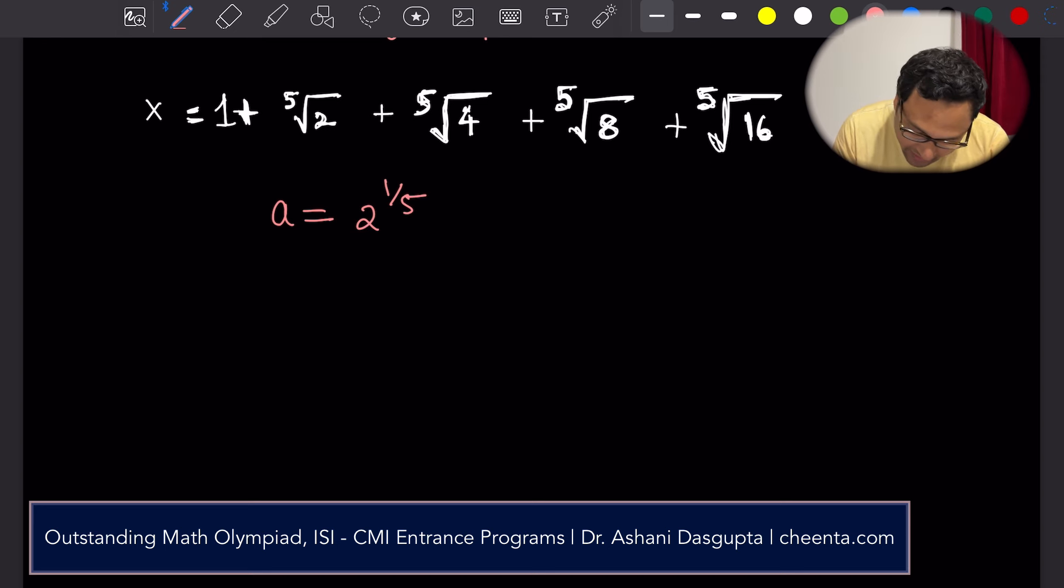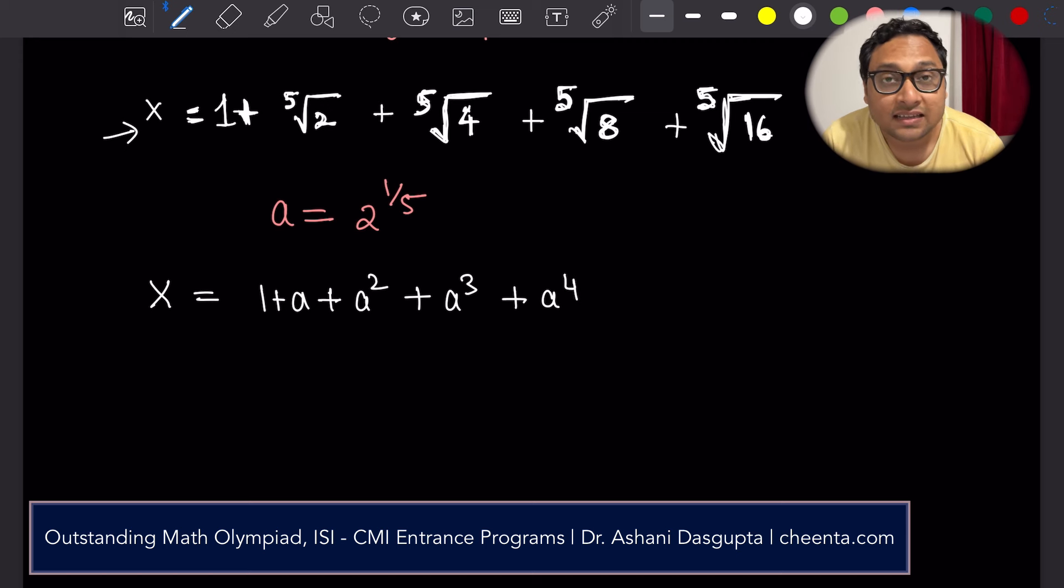let's take a equals to 2 to the power 1 by 5. You will immediately see that we can rewrite x as 1 plus a plus a squared plus a cubed plus a to the power 4. We can rewrite x like this.